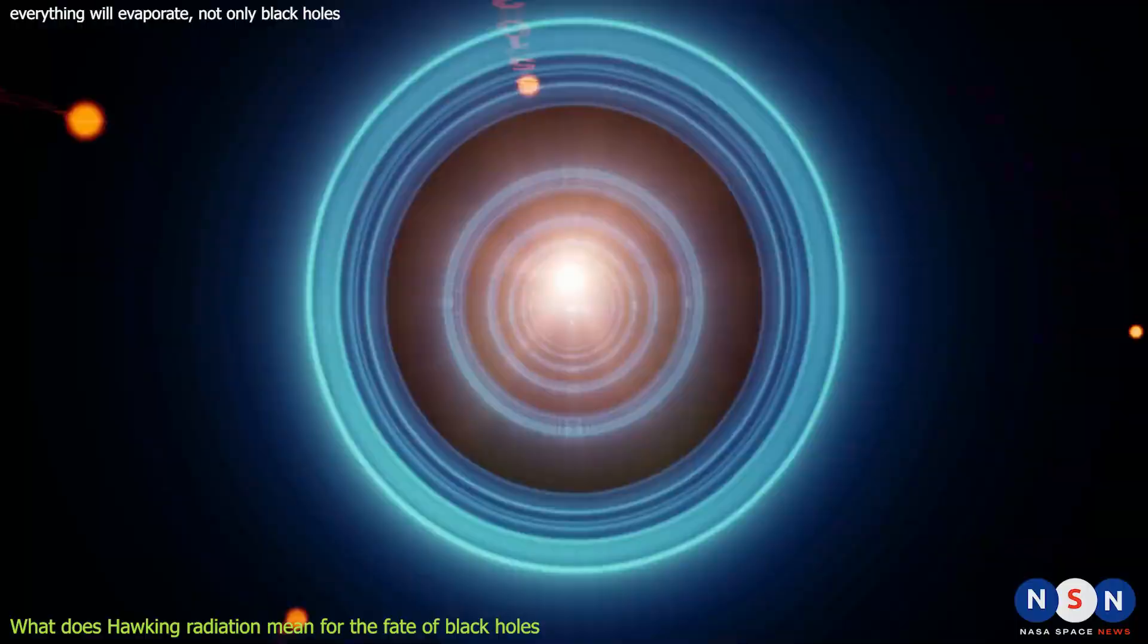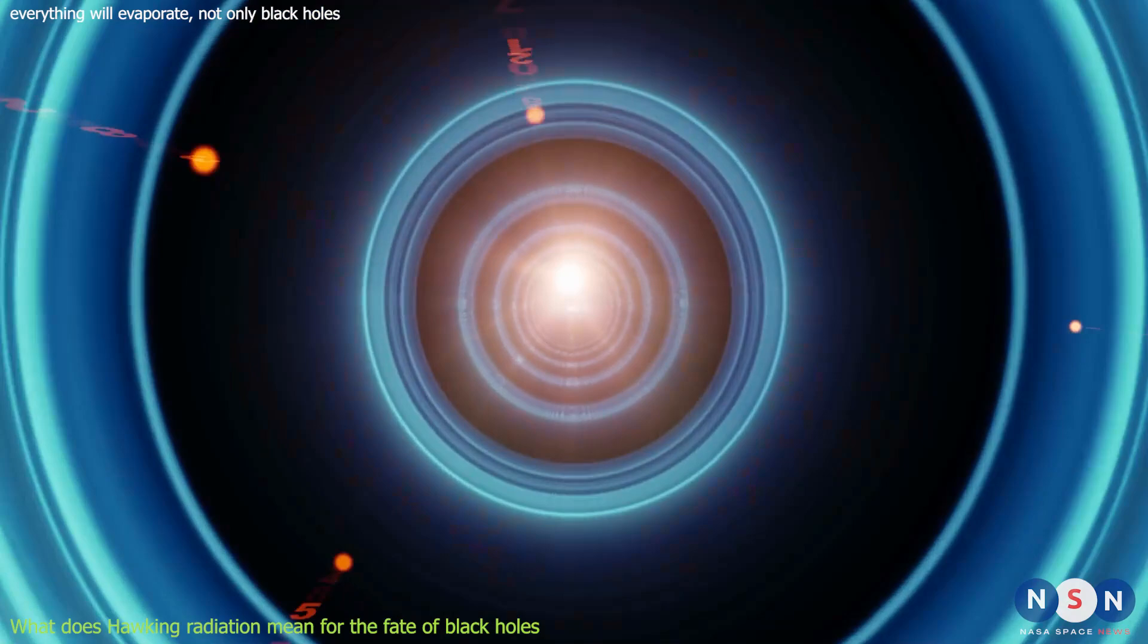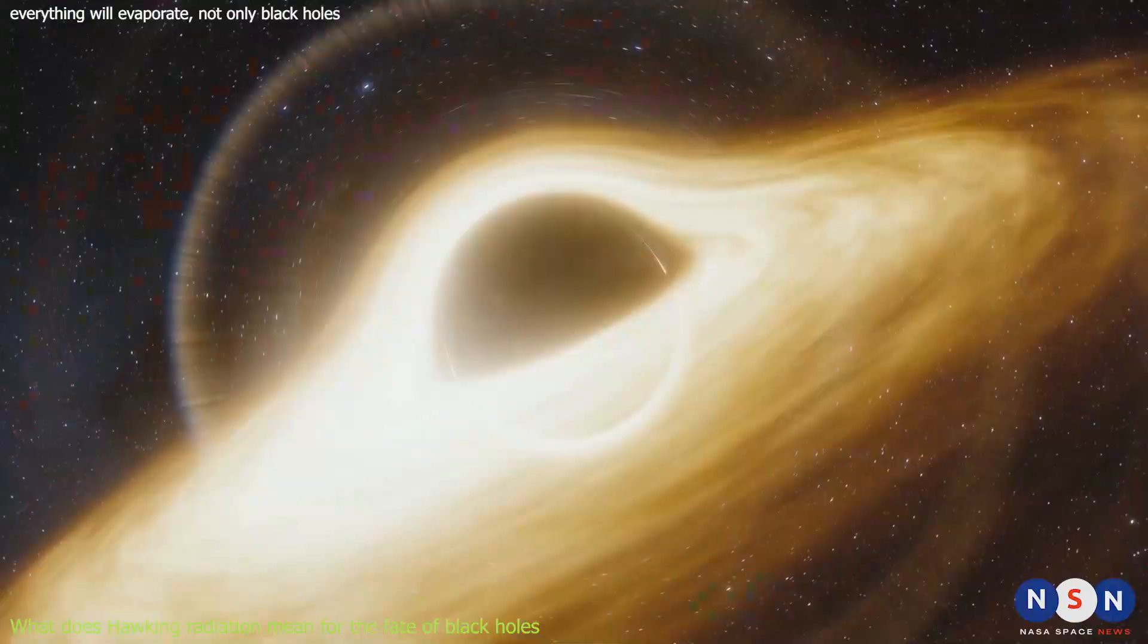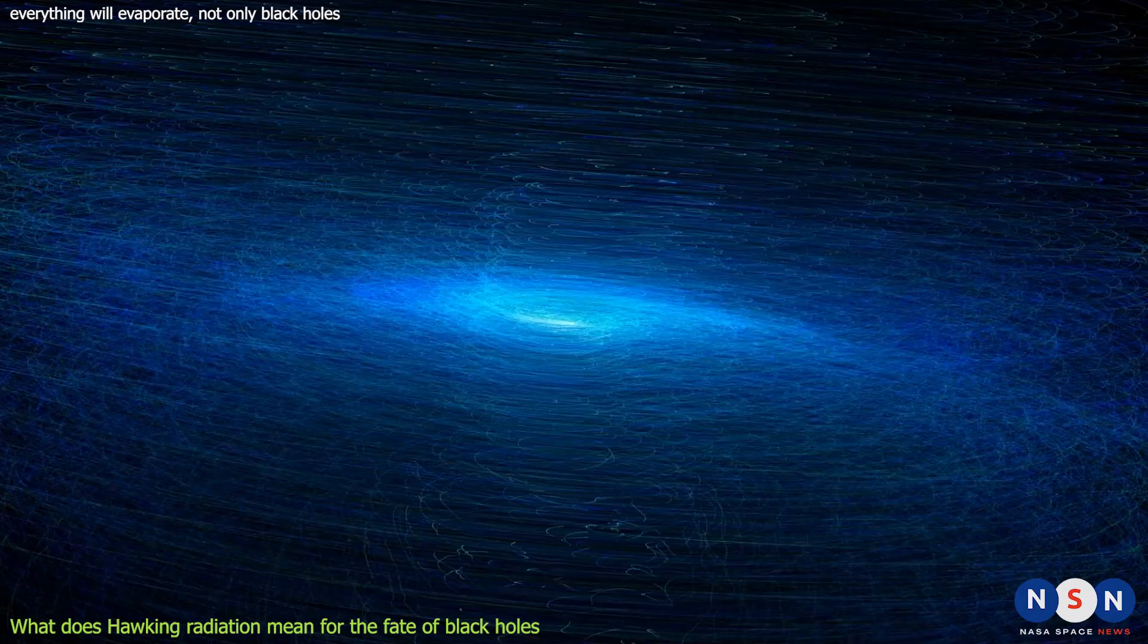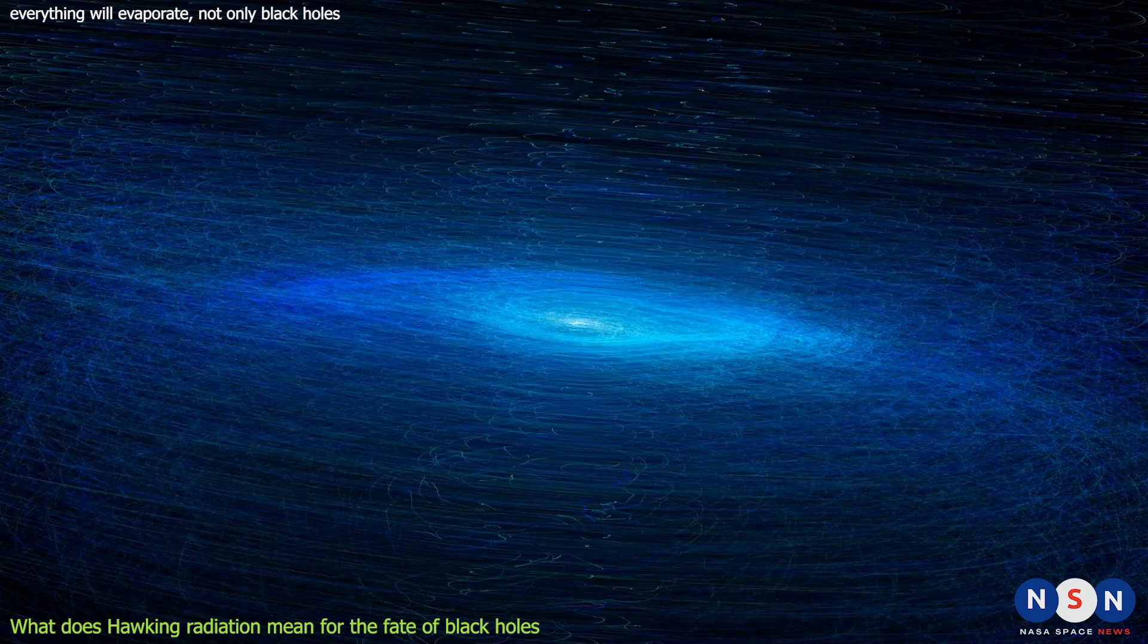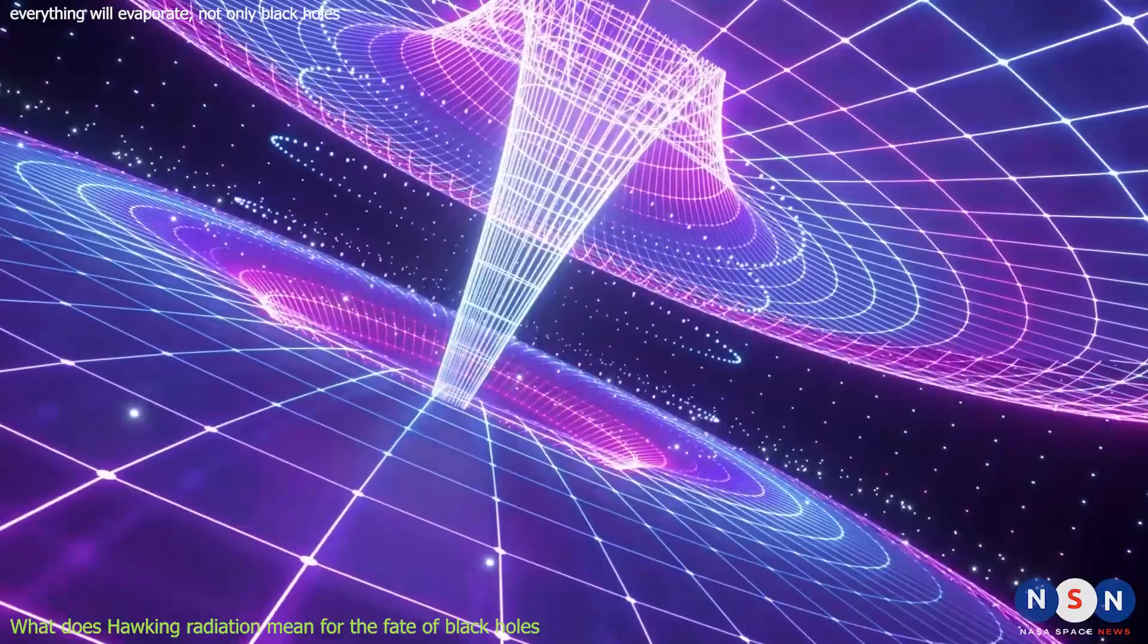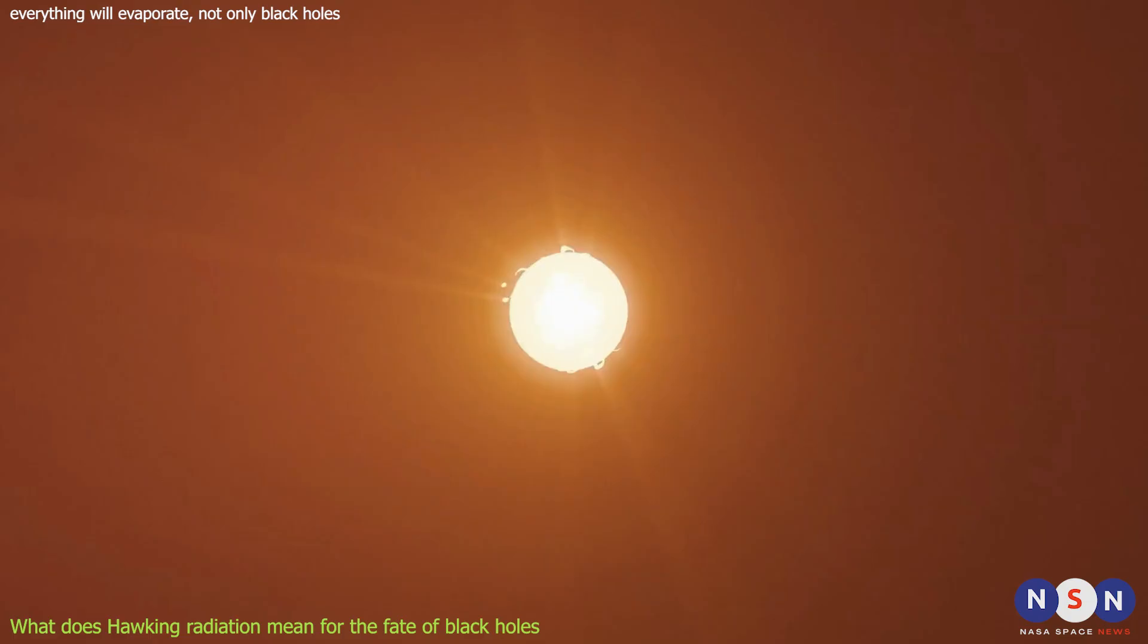The evaporation of black holes raises some interesting questions about what happens to the matter and information that falls into them. According to quantum mechanics, information cannot be destroyed or created, only transformed or transferred. But according to general relativity, information cannot escape from beyond the event horizon. So where does it go? Does it disappear with the black hole? Does it leak out with the Hawking radiation? Does it remain hidden in a remnant or a baby universe?